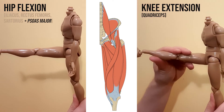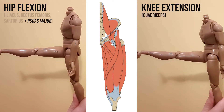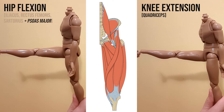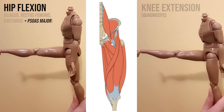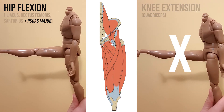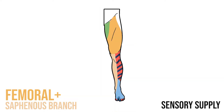Extension of the knee is a different matter. Only the quadriceps can produce this action, so loss of the femoral nerve will result in a complete loss of this movement. Similarly, the cutaneous innervation of peripheral nerves is fairly discrete, so it's unlikely that another peripheral nerve will provide sensation to these areas. So if the femoral nerve is severed, we'd expect to see weakened hip flexion, absent knee extension, and a loss of sensation over the anterior thigh and medial leg.